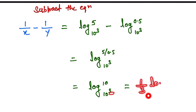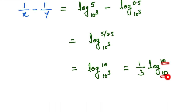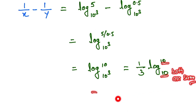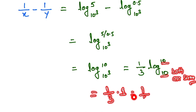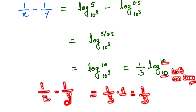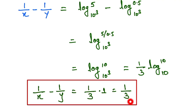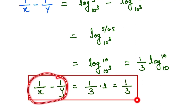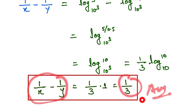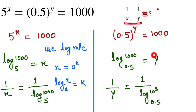This simplifies to (1/3) times log base 10 of 10. Since the base and the argument are the same, log base 10 of 10 equals 1. So (1/3) times 1 equals 1/3, and this is our final answer: 1/x minus 1/y equals 1/3. Thank you so much for watching. If you like the video, please subscribe to our channel and share it with your friends.